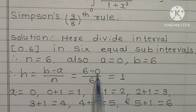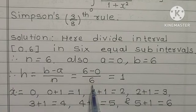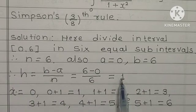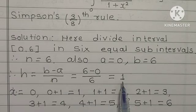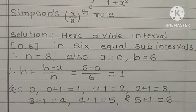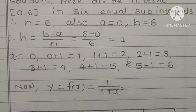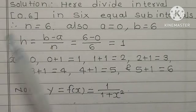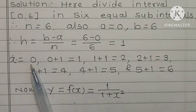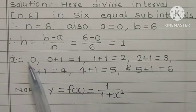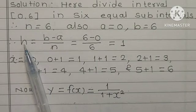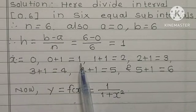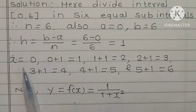6 minus 0 that means 6 upon 6, that is 1. So H is equal to 1. That means this is the difference. Now see, X is 0, that means this value 0. Now add H every time you will get 0 plus 1, that is equal to 1.